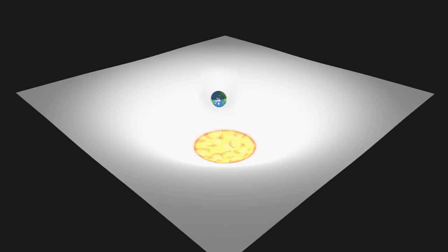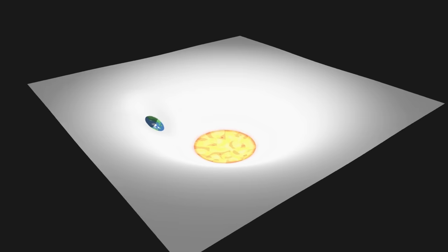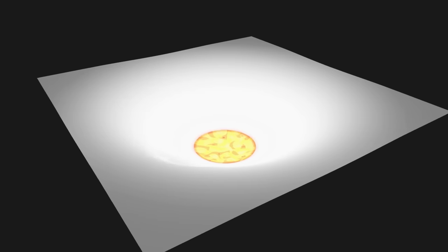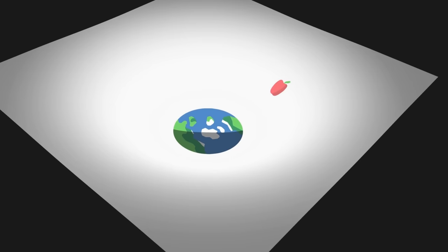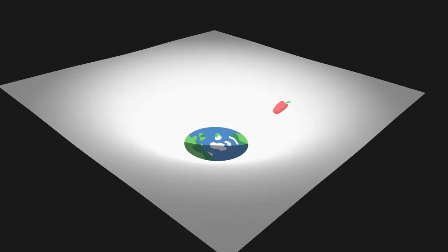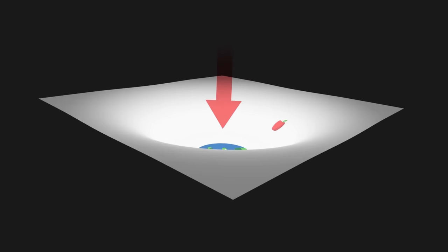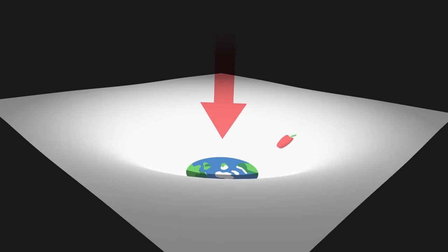Next, one of the biggest problems with this representation is that it sort of explains gravity by gravity. To the question, why does the apple fall on Earth, this visualization seems to answer that it is because the apple is pulled downwards, which causes it to fall like a marble in a bowl.